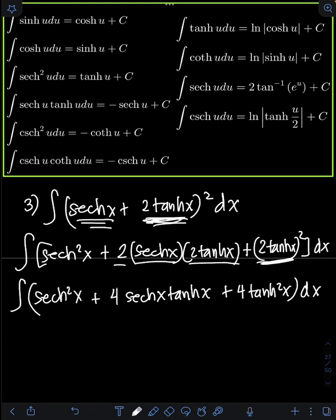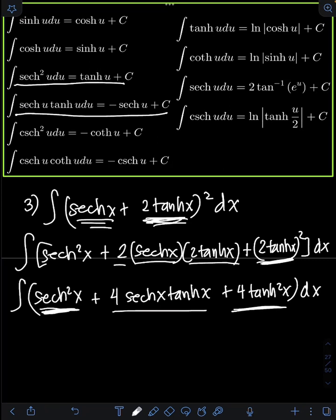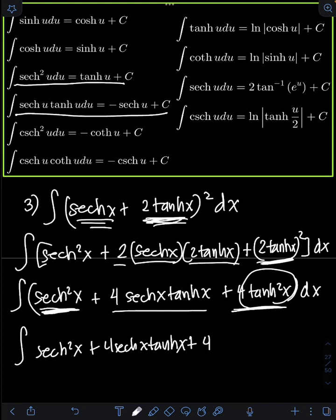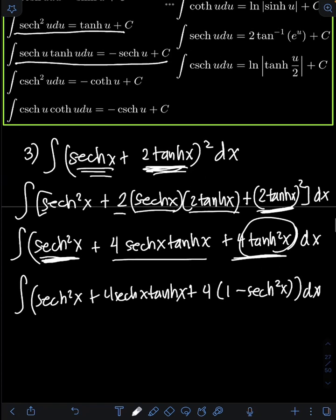For sinh²(x), we already have a formula: the integral of sinh²(u) du equals (1/2)(sinh(2u)/2 - u), and for 4sinh(x)tanh(x) we also have a formula. For the 4tanh²(x) term, we don't have a direct formula, so we apply the Pythagorean identity for hyperbolic functions. So tanh²(x) is equivalent to 1 minus sech²(x), meaning the 4tanh²(x) becomes 4(1 − sech²(x)) dx.